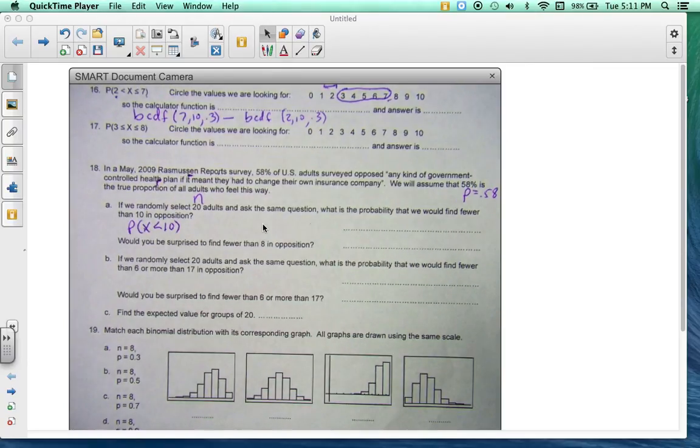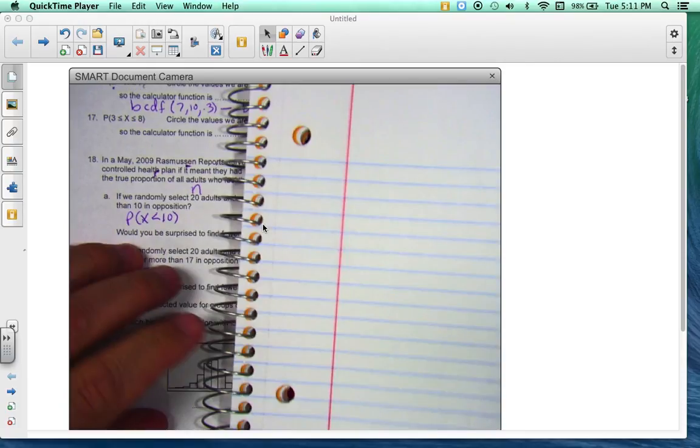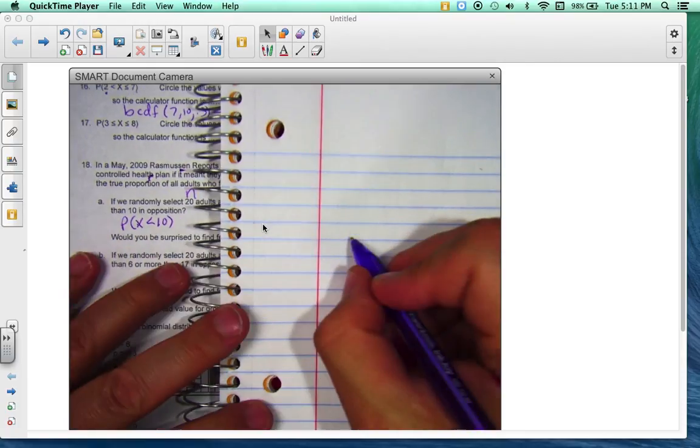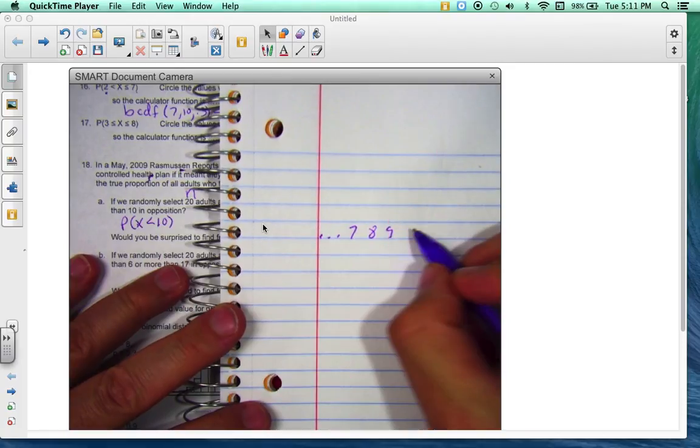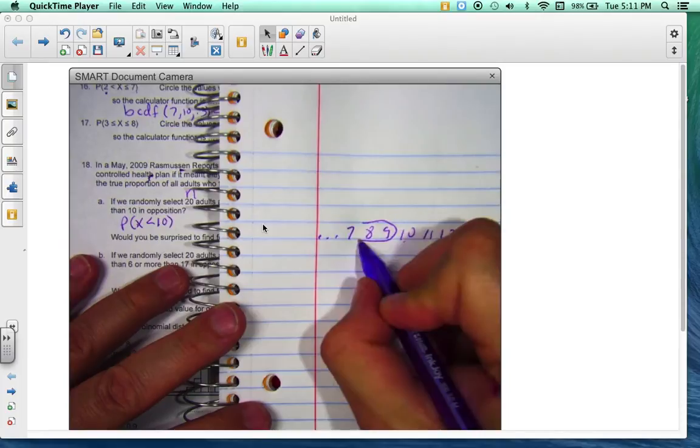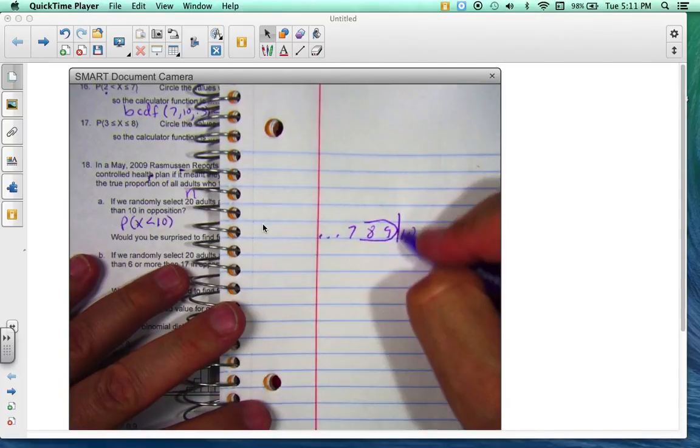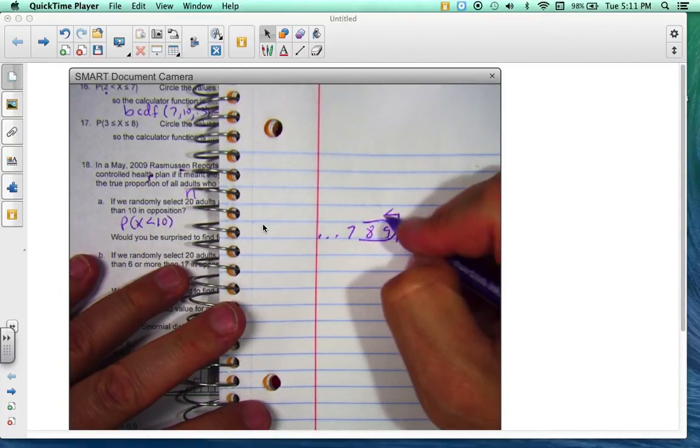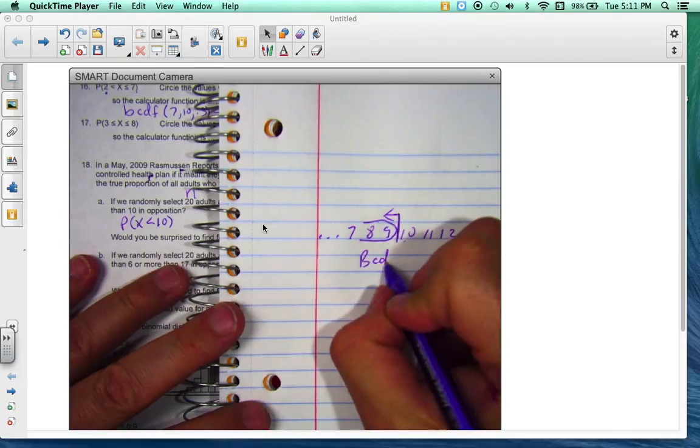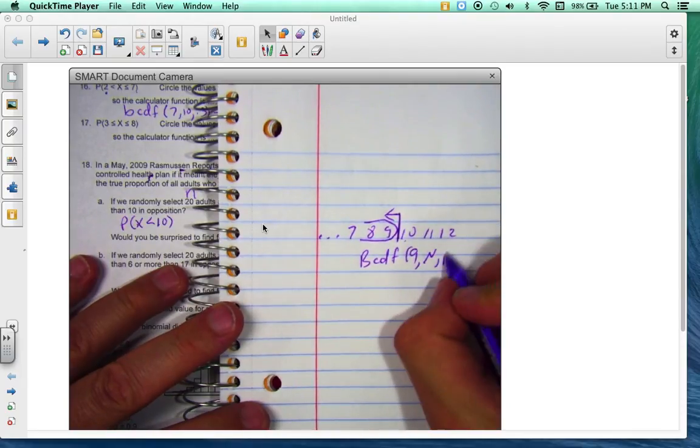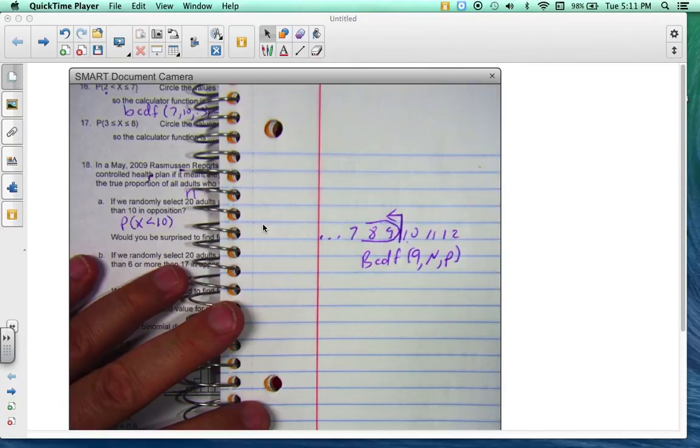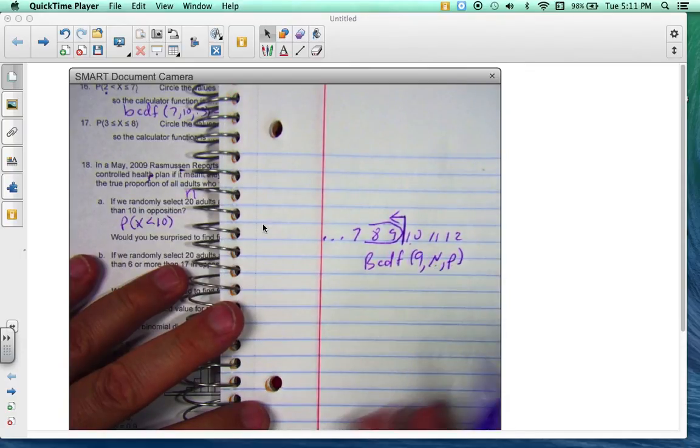So the probability that x is less than 10. So basically what that looks like is this: if I had 7, 8, 9, dot dot dot, 10, 11, 12, I want less than 10. That means I want to start at 9. So I want less than 9. So I need a binomial CDF of 9 and then whatever n and then p is. So let's go ahead and put that into play.